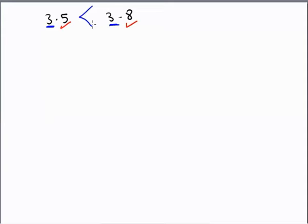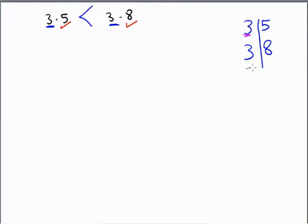We have another way to solve this. You make a line, then you have 3 and 5, and here 3 and 8. Check: here I have 3 and 3, then 5 and 8. 8 is greater. Now, how to arrange a group of decimal numbers?